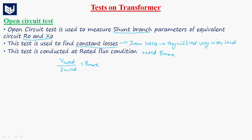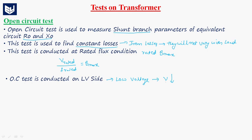This test is generally conducted on the LV side of the transformer — that is, the low voltage side. Because on the LV side the voltage is less, we can easily provide that low voltage using the sources we have, compared to providing a high voltage.